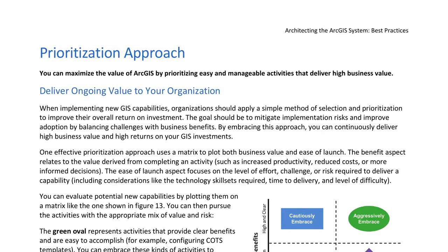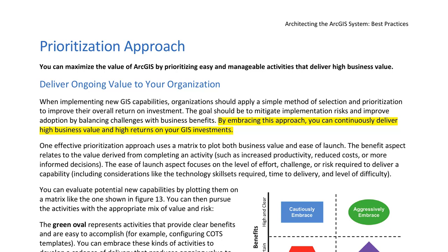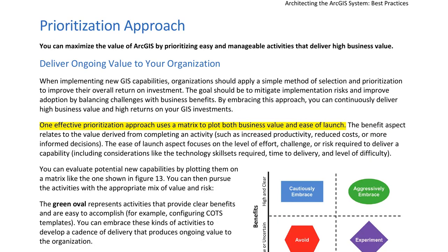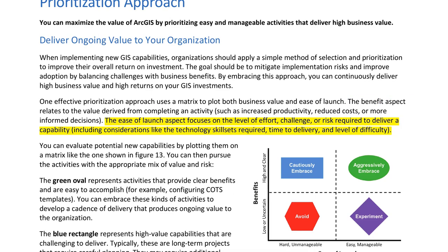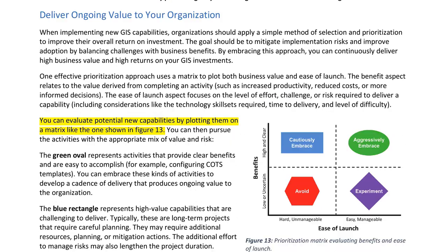Prioritization Approach. You can maximize the value of ArcGIS by prioritizing easy and manageable activities that deliver high business value. Organizations should apply a simple method of selection and prioritization to improve their overall return on investment, mitigating implementation risks and improving adoption by balancing challenges with business benefits. One effective approach uses a matrix to plot both business value and ease of launch. The benefit aspect relates to the value derived from completing an activity, such as increased productivity, reduced costs, or more informed decisions. The ease of launch aspect focuses on the level of effort, challenge, or risk required, including technology skill sets, time to delivery, and level of difficulty.